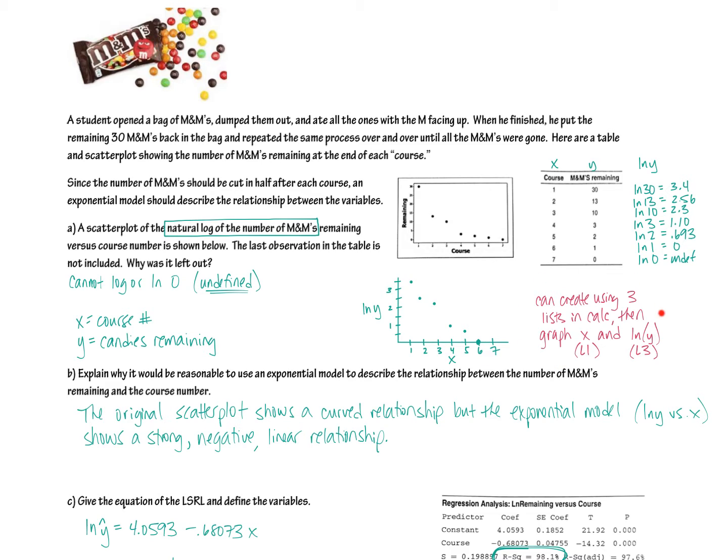Wow, interesting. You can do this in the calculator, FYI. You can type this into list 1 and this into list 2. If you go up and highlight list 3, you can enter in a command and just type LN list 2, and it will do all of these for you. It's only 7 numbers, so it's not that difficult to do it yourself. But remember, your calculator is very powerful and very smart. Why is the last observation in the table not included? Because when I had 0 M&Ms left, remember when you natural log 0, that's undefined. You can't do it. So that's why there's only 6 dots here as opposed to the original 7.